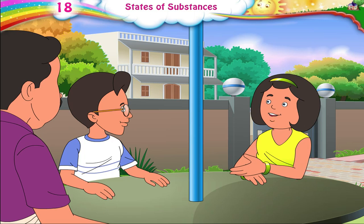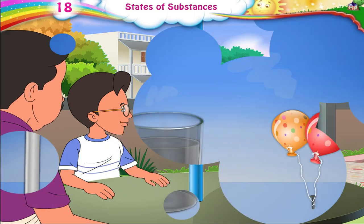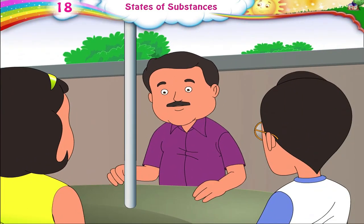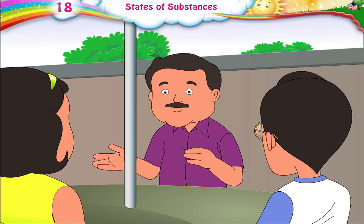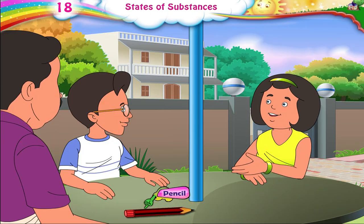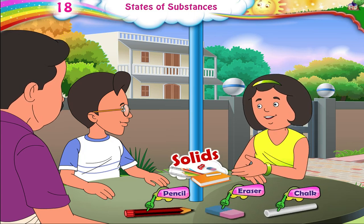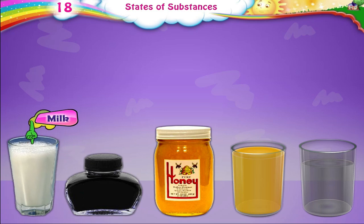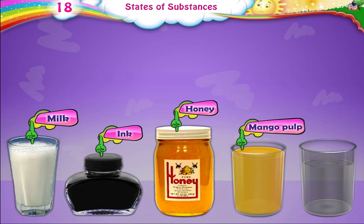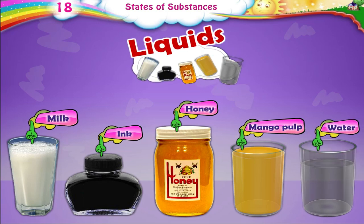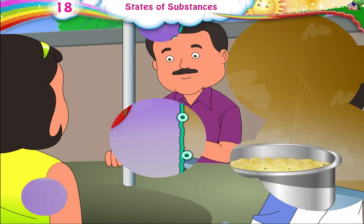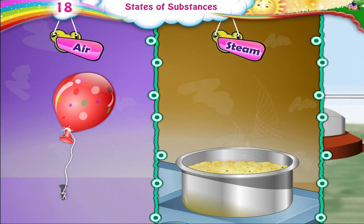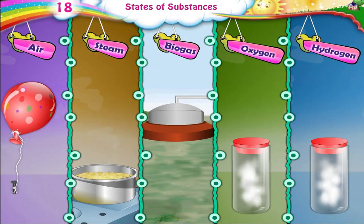Papa, you keep saying 'state.' What does state mean? State means the condition or form in which something is present. Rhea, can you name some solids? A pencil, eraser, and chalk are all solids. What about liquids, Raj? Milk, ink, honey, mango pulp, and water are liquids. And gases? Air and steam are gases. And biogas, oxygen, and hydrogen are all gases.